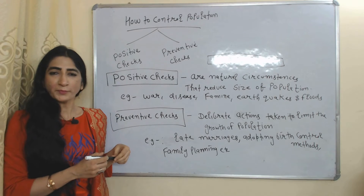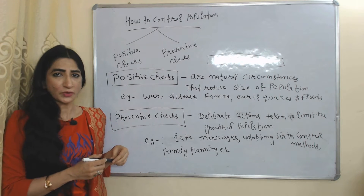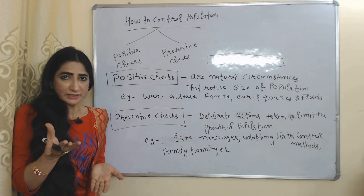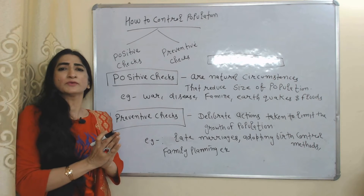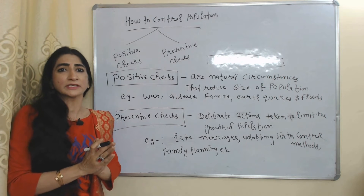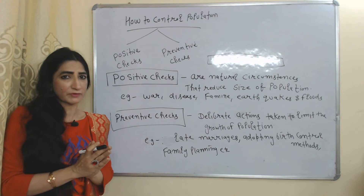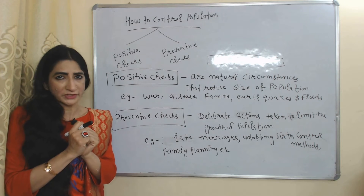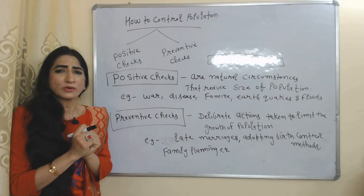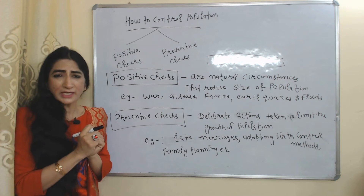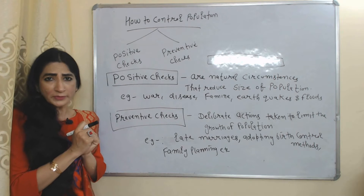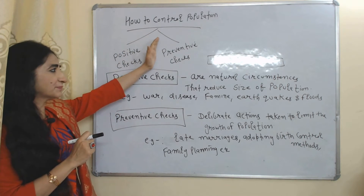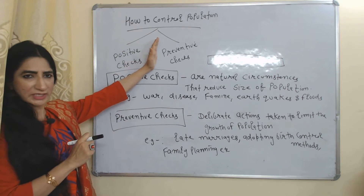If population is growing but we don't have food to eat, it will obviously lead to a very complicated situation for our economy. So we need to control population. According to this theory, we can control population by two ways: positive checks and preventive checks.